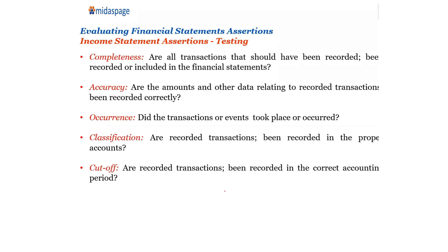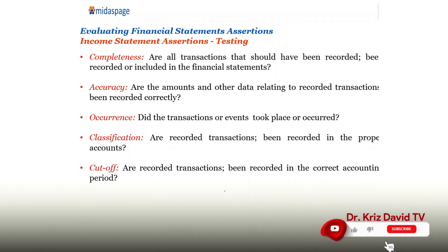You pick one item, you ask the question, you are demanding an answer. Two: accuracy — are the amounts or other data relating to recorded transactions being recorded correctly? That is where measurement comes from. Three: occurrence — did the transaction or event take place or occur? Four: classification — are recorded transactions being recorded in the proper accounts?